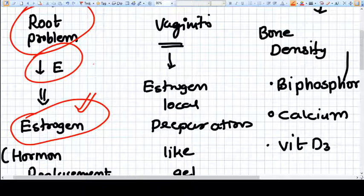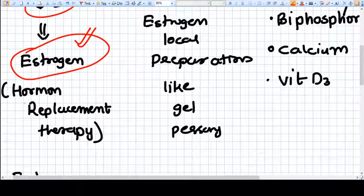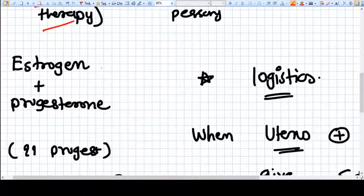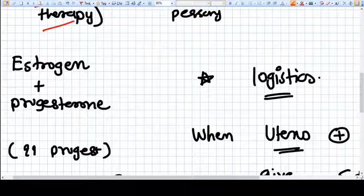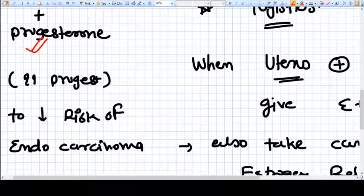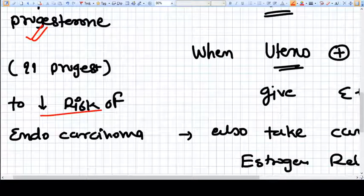We call it hormone replacement therapy. Generally, we combine estrogen with progesterone. You might think, why progesterone? Because it decreases the risk of endometrial carcinoma, which is elevated by only estrogen.